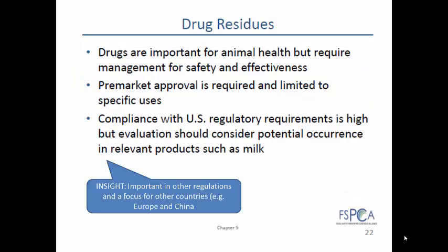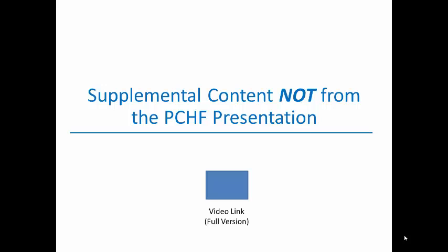There's a section on drug residues, and a key point is that drug residues are a concern. Drug residues are identified in the Human Foods Preventive Control Rule and are required to be considered — and this is a type of food fraud. If excessive drug residues are used in animals, that's a type of fraud. This is an area it covers as well. With additional insight, it's important in other regulations and a focus for other countries, specifically Europe and China, where there is great focus on these issues.